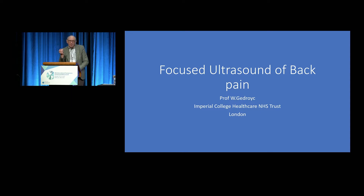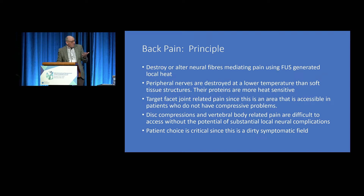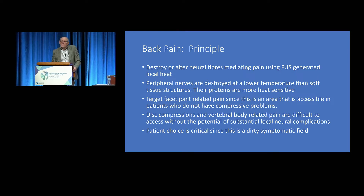The predominance of what we're going to discuss today is aimed at the facet joint — one of the few targets reachable with focused ultrasound. Between 20 to 30 percent of back pain is attributed to facet joint pain. The neural structures around the facet joints fire off and mediate back pain, though we don't fully understand it. We mimic existing interventional procedures — injecting steroids, local anesthetics, ablating facet joints — destroying or altering the neural fibers mediating pain using focused-ultrasound-generated local heat.